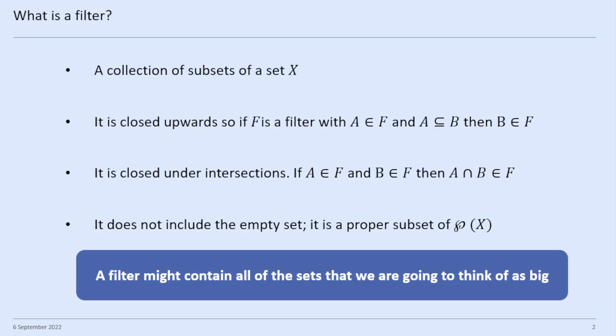If you picture it, it looks a bit like a triangle or a cone with the point at the bottom. It does not include the empty set — so as a cone, it doesn't touch the very bottom of the power set. It's a proper subset of the power set, so it doesn't contain all of the power set. If it contained the empty set, it would contain all of the power set, because every set is a superset of the empty set, so it would contain everything else.